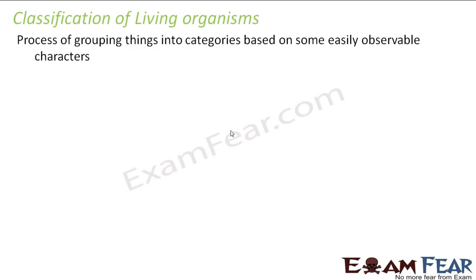So what is classification? It is the process of grouping things into categories based on some easily observable characters. We divide organisms into groups on the basis of common characters — all those organisms which share a common character are put into the same group. For example, in your school, students are divided into different classes by age. All students of class 1 are of the same age, class 2 the same, and so on. Similarly, this process of classification works.